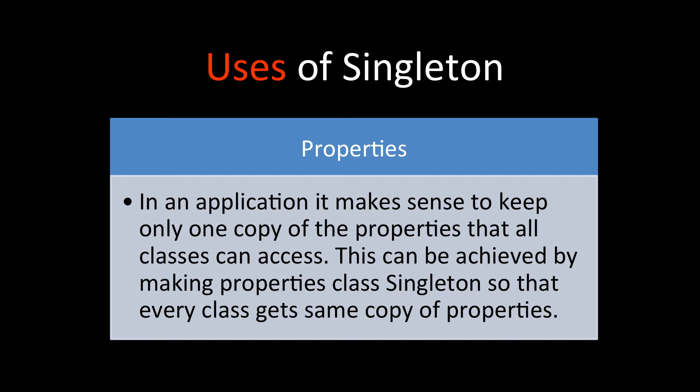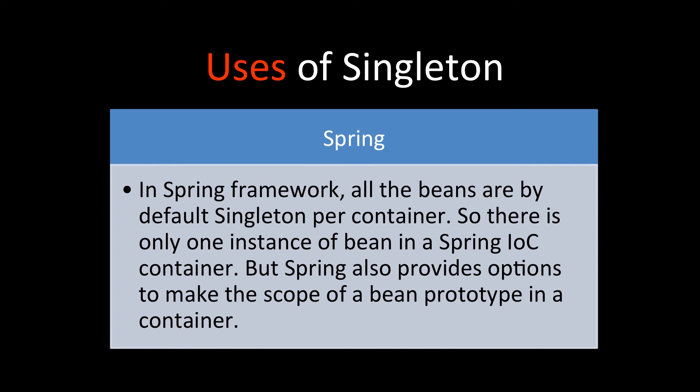Then comes properties. Whenever we have an application, we want to store only one copy of the properties so that all classes can access that one copy, and whenever we have to update, we update only that copy. This can be achieved by making the properties class a singleton, so every class gets the same copy of properties — that is also a very good use of singleton.